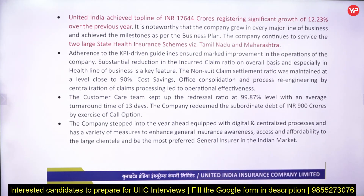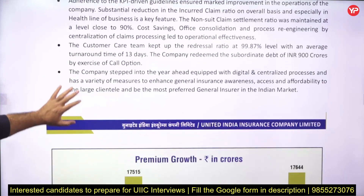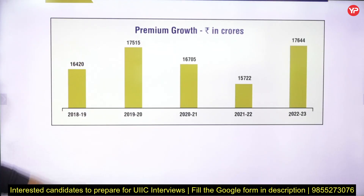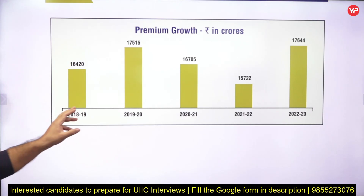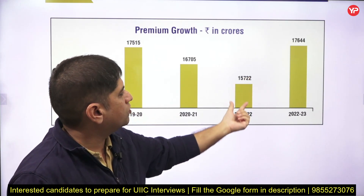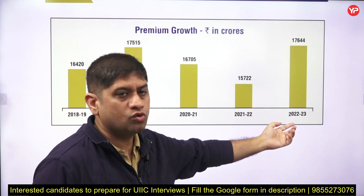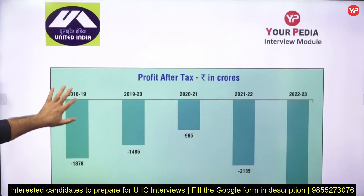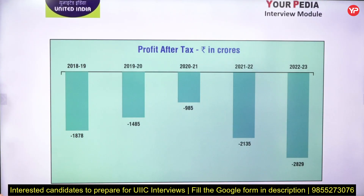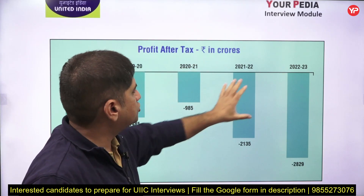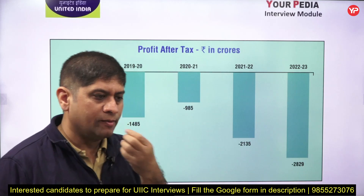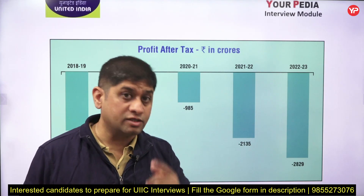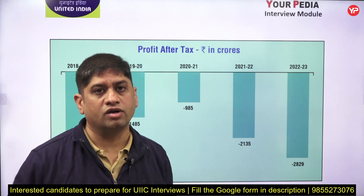The company also wants to go for digitalization and centralization of many of its activities. Looking at the statistics, premium has grown from 2021-22 to 2022-23, but if you look at the profit situation, the company is not in profit — it is in losses. United India Insurance has been in losses for the past many years, so interviewers may ask why you want to become part of a loss-making company.